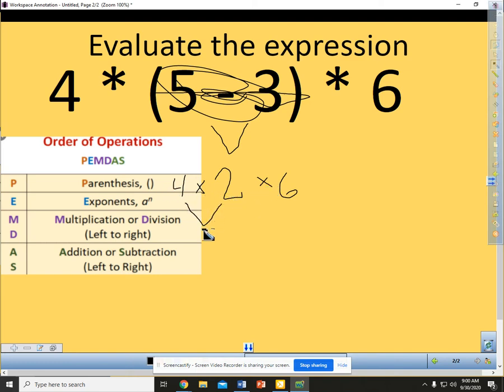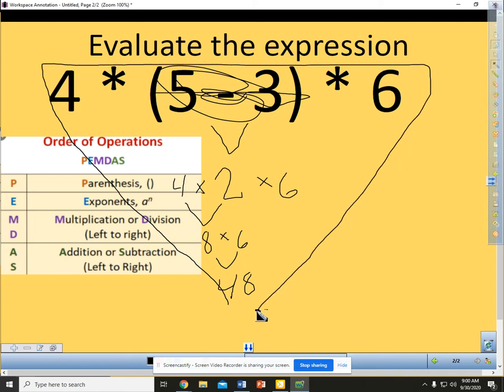So 4 times 2 is 8. And 8 times 6 is 48. I could have gone from the right to the left being it's just multiplication and done 6 times 2 is 12 times 4 is 48. It wouldn't really matter as long as they're the same operator. So that one simplifies to 48. There's no more simplifying that I can do there.